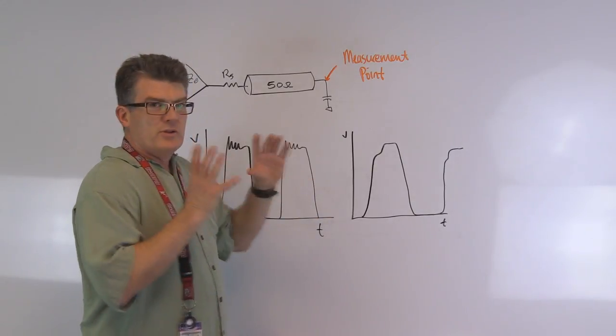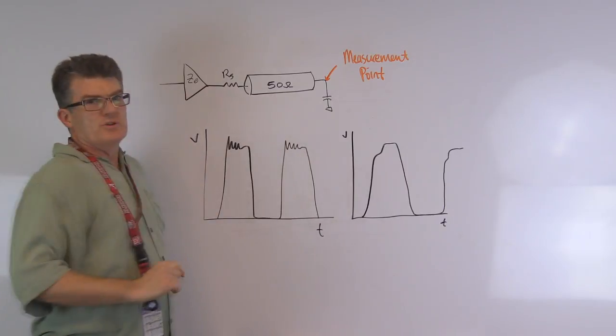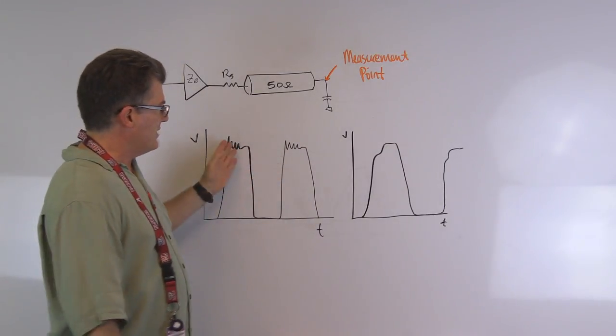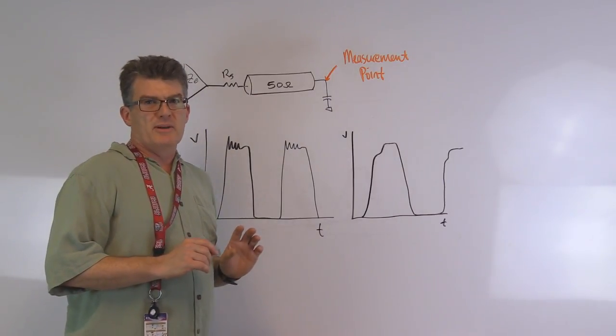So as long as they're both occurring identically, you can adjust it out with the resistor. But if you see only on one half of the clock, the rising edge or falling edge, that means that the driver's got a problem and you need to talk to your silicon manufacturer.